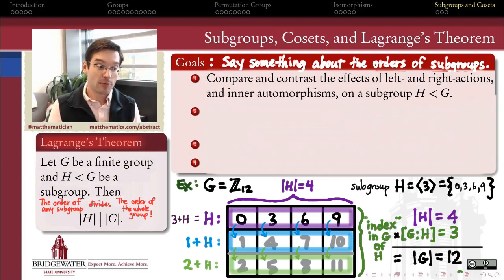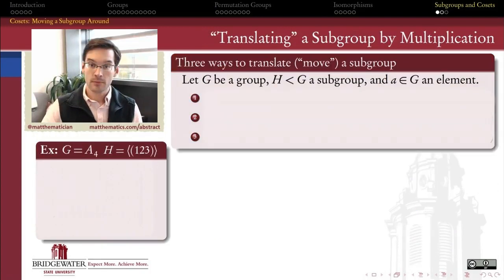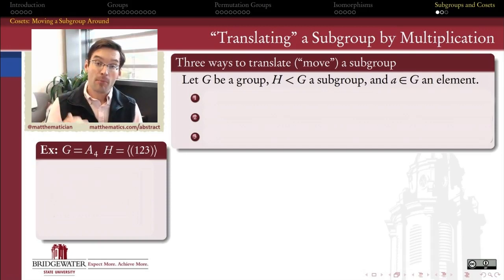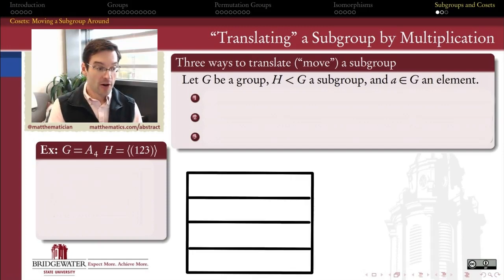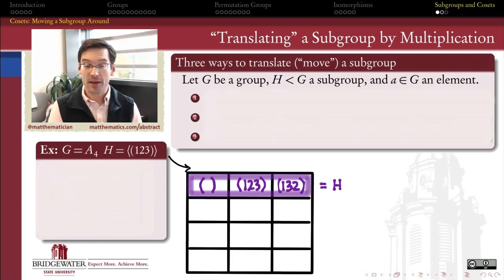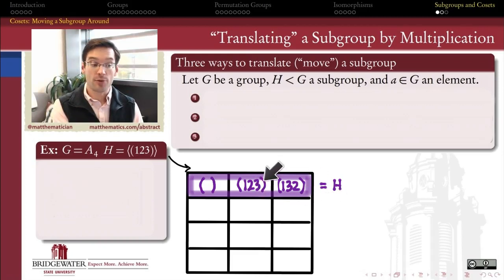That's what we're doing in this video: understanding how left and right actions and inner automorphisms induced by elements of G act upon subgroups of G. We're going to look first, by way of example, at three different ways of moving a subgroup H around inside of a group G by multiplying by an element of G. For our motivating example, we're going to take the group A4, the alternating group on four symbols — the even permutations of four elements — and the subgroup inside of it, which is the cyclic subgroup generated by the three-cycle (1 2 3).